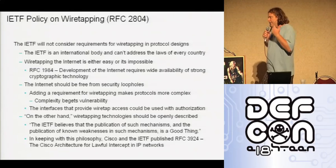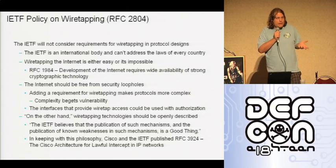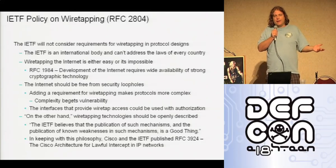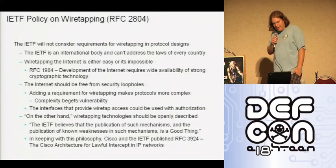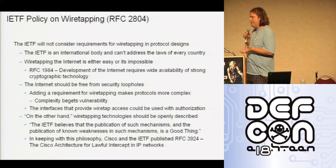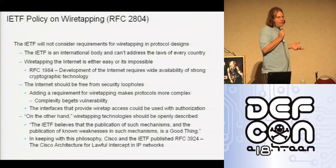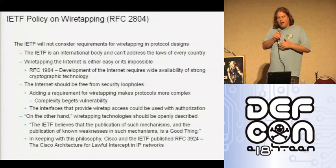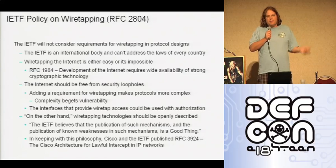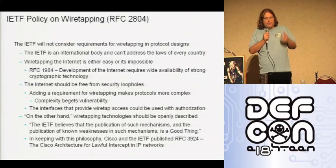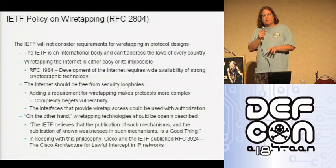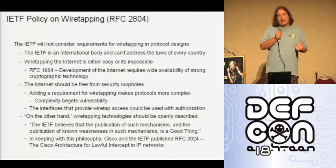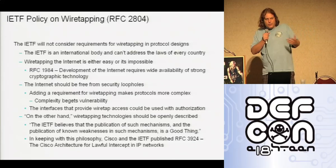Another argument the IETF made is that the internet should be free from security loopholes. If you build interfaces into the internet that enable wiretapping, someone might misuse them or gain unauthorized access. However, they did say that if you were going to design a surveillance system into the internet, you should tell everyone how you did it — publish the details of your architecture. This allows peer review, and it's consistent with how the internet is designed: almost all architectural underpinnings are available for all of us to read in RFCs. A secret surveillance system would be antithetical to how we design the internet.